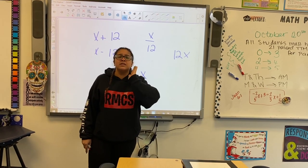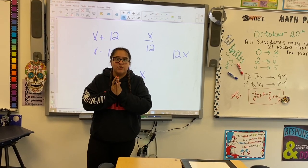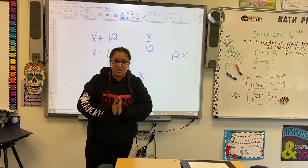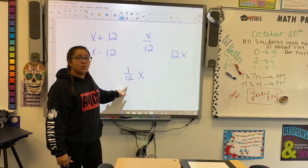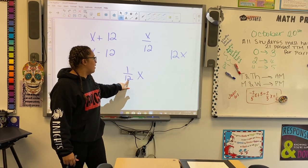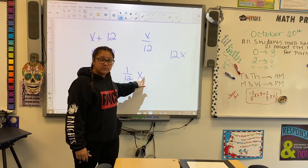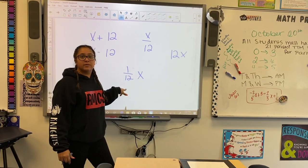And you have to remember, whenever there's a number attached to a variable, they're always multiplying. So technically, the way that I would read this is 1 divided by 12 times x. Do you understand? So this right here is a multiplication.